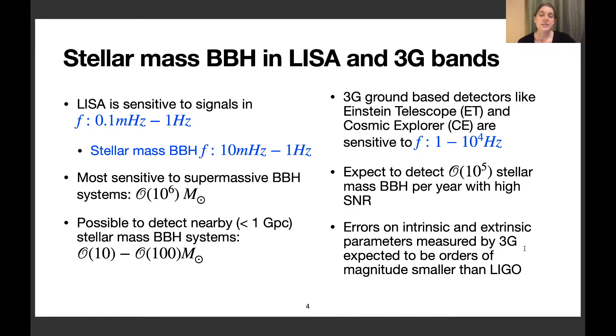LISA is sensitive to signals in the low-frequency band of about 0.1 millihertz to 1 hertz, and stellar mass binary black holes would fall into this range from about 10 millihertz to 1 hertz. Although LISA is expected to be most sensitive to supermassive binary black holes with masses around a million solar masses, we expect it could detect some stellar mass binary black holes in the range of 10 to 100 solar masses if they are sufficiently close.